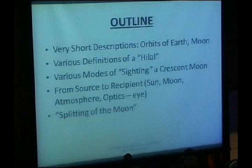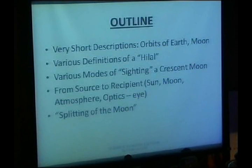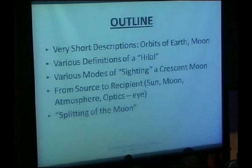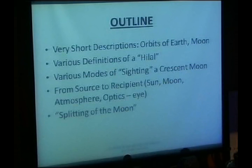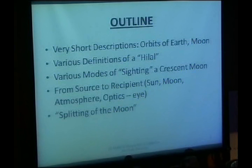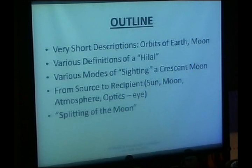The outline is: we are going to go through a very short description of the orbits of Earth, moon, and various definitions of the Hilal. I consider the definitions of Hilal also as a research topic, because it seems that we have different definitions for that. Then there are various modes of sighting the crescent moon. We are going to see, starting from the source — which is the light energy from the sun to the moon — which reflects that through the atmosphere and over with optics to our individual eye. And at the last one, I would like to touch upon the famous hadith of the splitting of the moon and what research we can do on that.